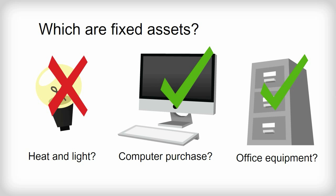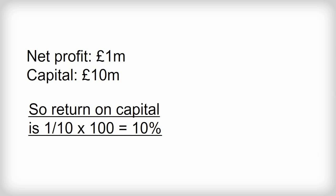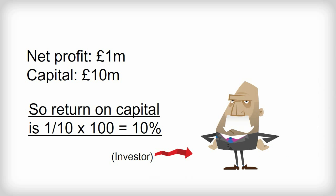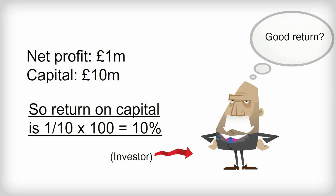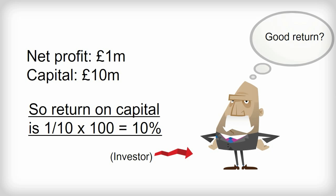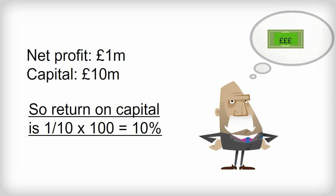You have to buy those fixed assets. The starting point for assessing whether return on capital is acceptable or not is current bank interest rates. Bank interest is guaranteed, but profit from a business is not. So business owners will normally be looking for return on capital well above interest rates. To put it another way, just making a profit is not good enough. Businesses need to make a profit that represents an acceptable return. The more risk there is, the more investors will generally want a good return. Risk here refers to the likelihood that a business will not succeed. Business is competitive after all.